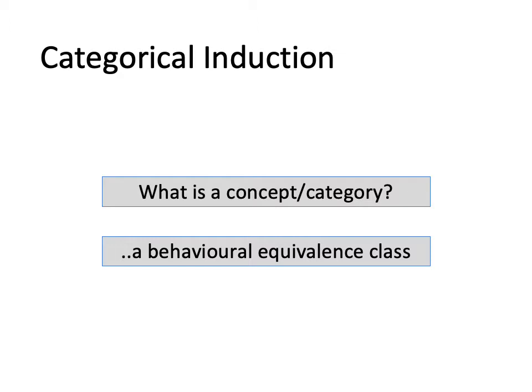I finished off the previous lecture with a description of what a category is. A category or concept is a behavioral equivalence class — a group of things that are different, but that we behave towards in the same way. And to some degree, that's what an inductive inference is: making a prediction about something because it's in a category. So let's talk about the nature of categorical induction.